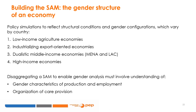An early study by Fontana built two gender-aware SAMs for Bangladesh and Zambia, clearly demonstrating that the same trade liberalization policies have different gender effects in the two countries because of their different socioeconomic structures, and in particular their different gender employment composition by sector. The main point is that decisions on how to disaggregate a SAM must be guided by understanding two core gender features: the gender characteristics of production and employment, and the way care provision is organized between institutions and by gender.